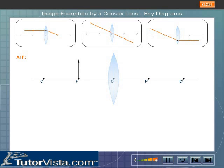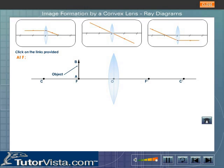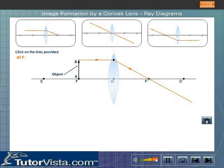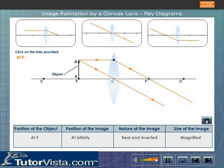Formation of image when the object is placed at F. Choose the rays by clicking on the links provided. A ray of light parallel to the principal axis after refraction passes through the focus F'. A ray of light passing through the optical center of the lens travels straight without suffering any deviation. These two refracted rays are parallel to each other and will meet only at infinity. Thus, when an object is placed at the focus F of a convex lens, a real, inverted, and magnified image is formed at infinity.